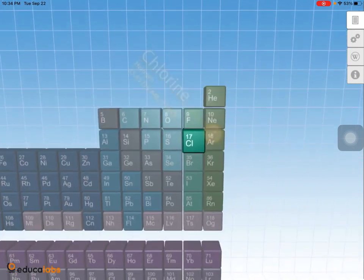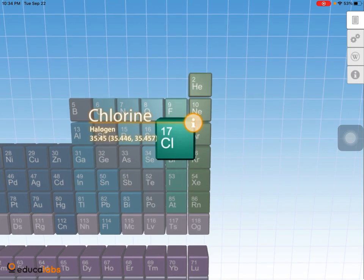For chlorine, the atomic mass is 35.45, and 35 and 37 are the two isotopes. Since 35.45 is closer to 35, this means chlorine-35 is found more abundantly than chlorine-37.